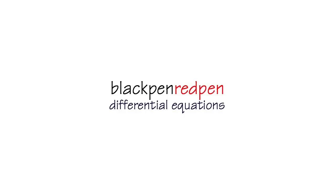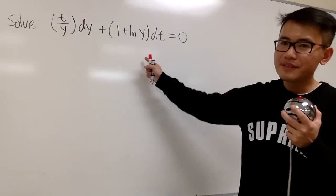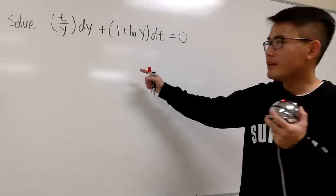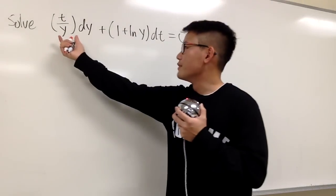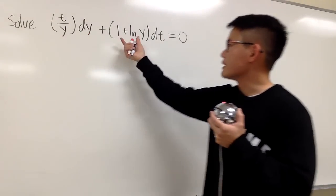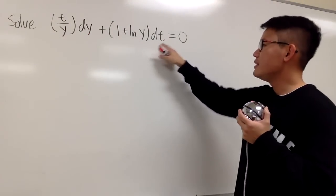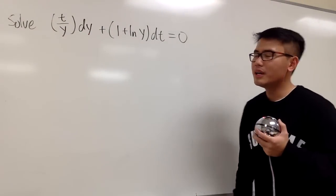Black pen, red pen, yay! Let's solve this differential equation. As we can see, we have something times dy plus something else times dt equals 0.